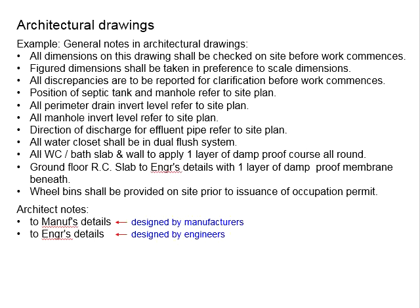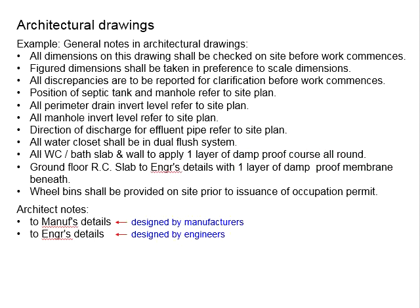Next: ground floor RC slab to engineer's details, with one layer of damp proof membrane beneath. When you see this statement, it most likely means the RC slab on the ground floor is a suspended slab in direct contact with the soil. This can cause capillary action from groundwater, bringing moisture through the slab into the building and causing issues such as efflorescence. The architect therefore requires the engineer to design the slab for structural stability, and specifies a damp proof membrane to prevent moisture rising through the ground floor RC slab.